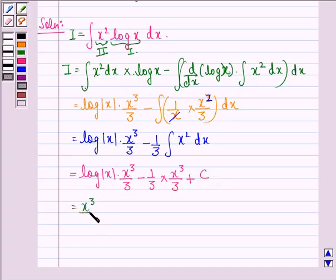So, our answer to this question is x cubed by 3 into log of mod x minus x cubed by 9 plus c.